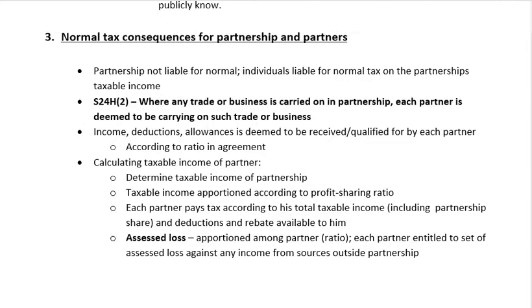Regarding assessed losses: a partnership may make an assessed loss, but this assessed loss will also be apportioned among the partners according to the profit-sharing ratio. Each partner will then be entitled to set off this assessed loss against any income from sources outside the partnership. If the individual partner has an assessed loss, then he may carry it over to the next year. The assessed loss of the partnership needs to be apportioned according to the partnership profit-sharing ratio.